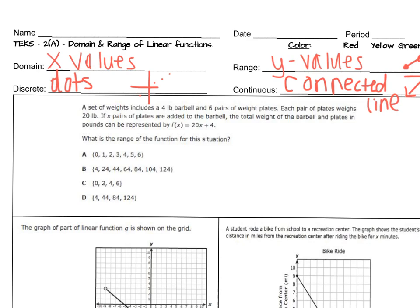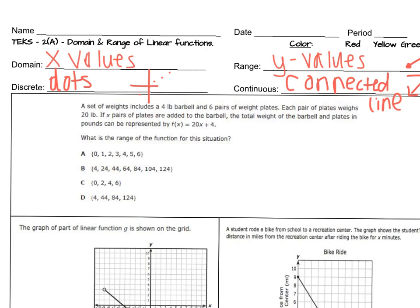For the first problem, this says a set of weights includes a four pound barbell and six pairs of weight plates. Each pair of plates weighs 20 pounds. If x pairs of plates are added to the barbell, the total weight of the barbell and plates can be represented by this equation. What is the range of the function for this situation? So range is our y values. It says we can add up to six pairs of weight plates. So if we add up to six, that means we can have six different totals for our y or f(x) value.